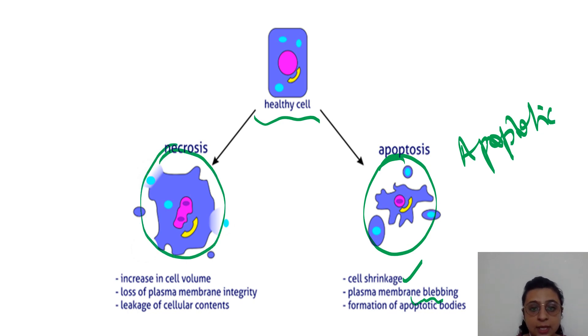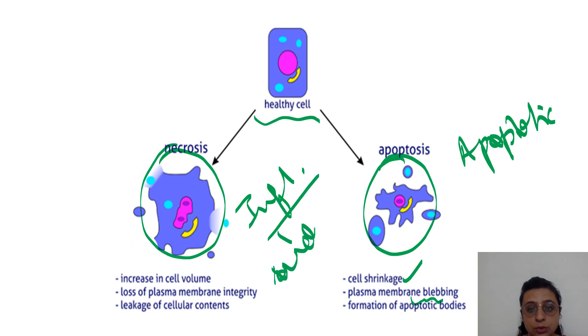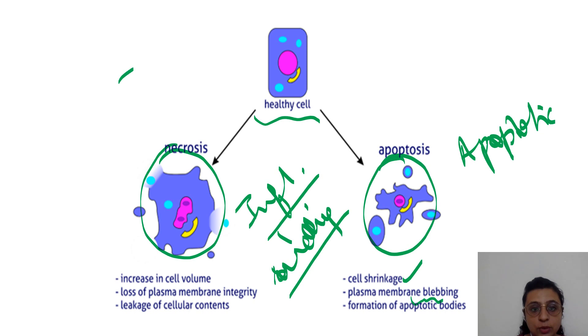In necrosis, inflammation is there. With inflammation, swelling occurs due to influx of a large amount of water inside the cell, because the plasma membrane is destroyed.